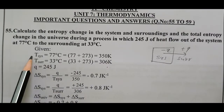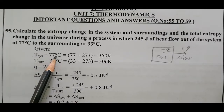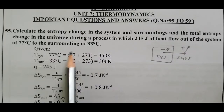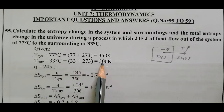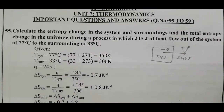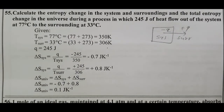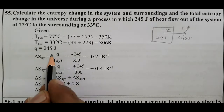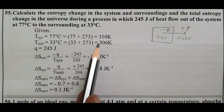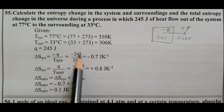The temperature of the system is equal to 77 degrees Celsius, which is 77 plus 273 equals 350 Kelvin. Surrounding temperature is 33 degrees Celsius, equal to 33 plus 273 equals 306 Kelvin. Q equals 245 J. Delta S system equals Q system divided by T system. System energy loss equals minus Q, so minus 245 divided by temperature 350.